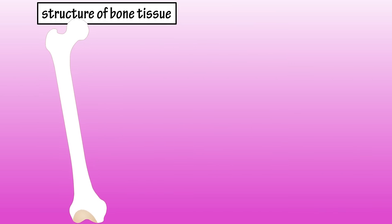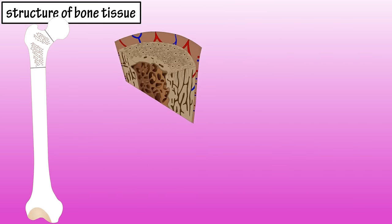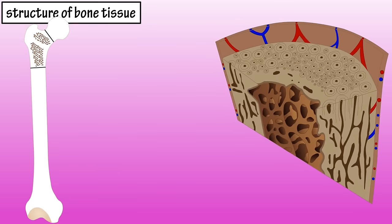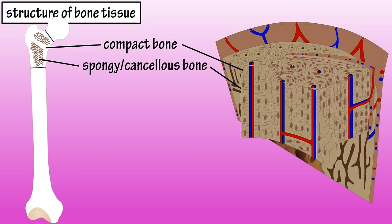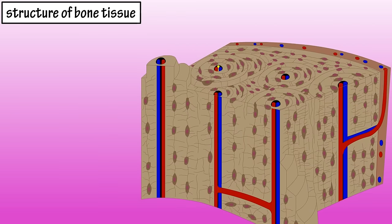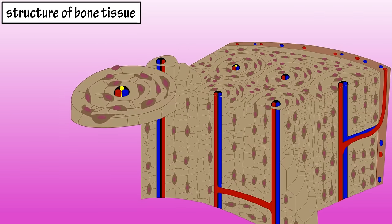Let's start by looking at a diagram of bone tissue. There are two main types of bone tissue: compact bone and cancellous, or spongy bone. Compact bone surrounds the spongy bone tissue, and it has a unique appearance. These cylinder-shaped structures are called osteons, or Haversian systems.